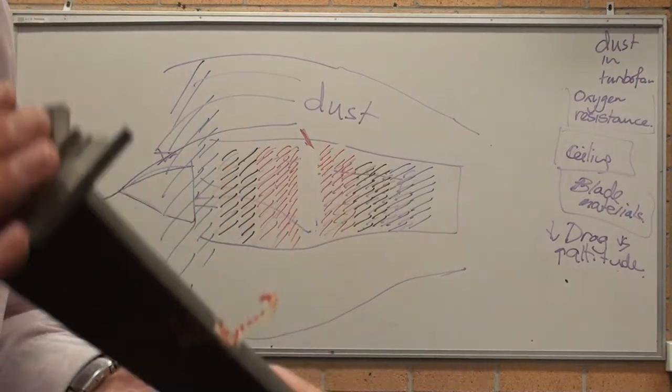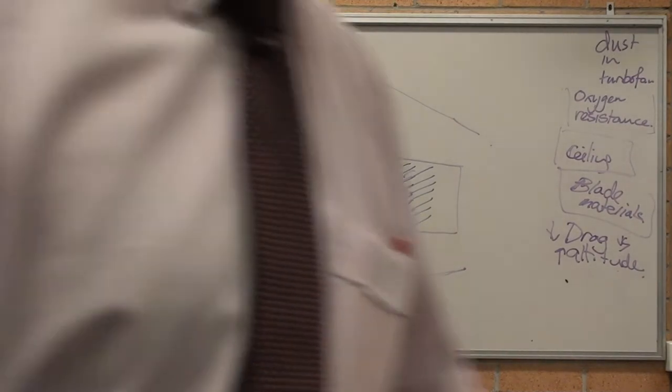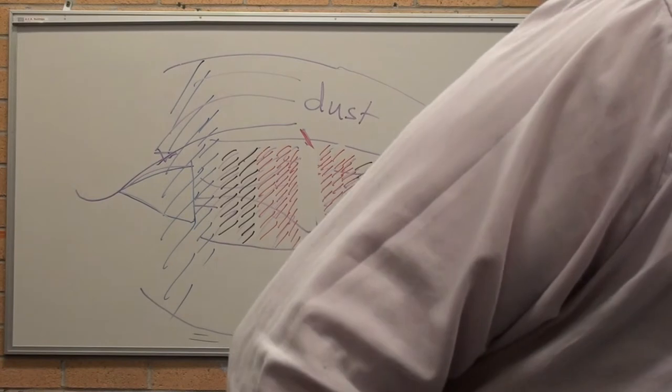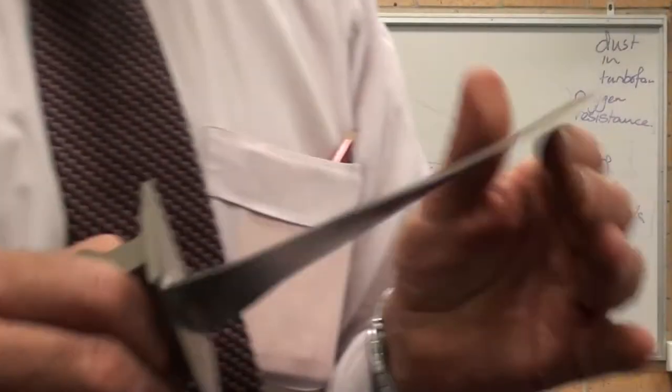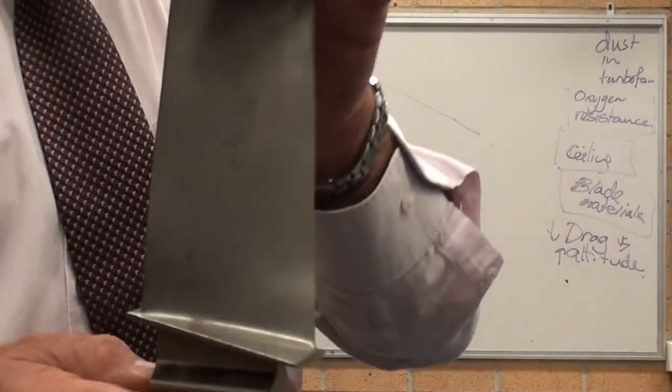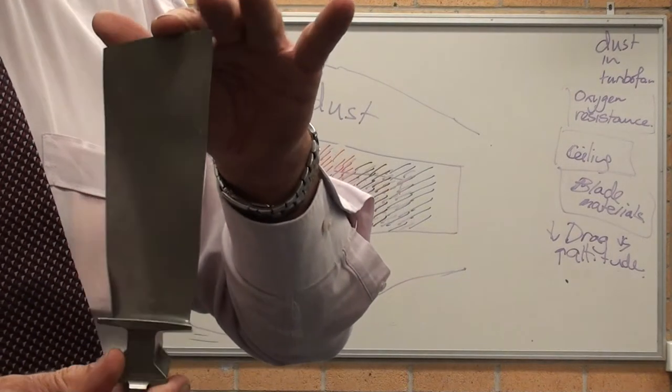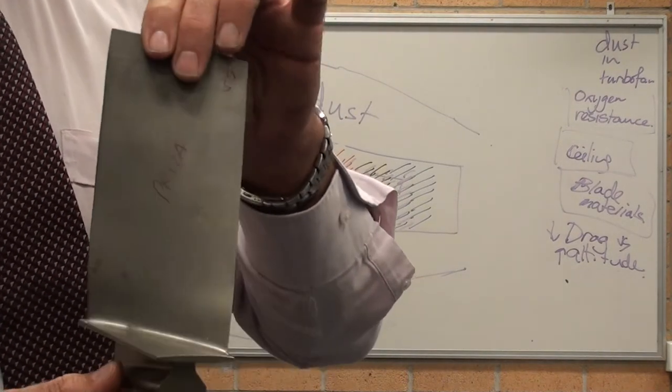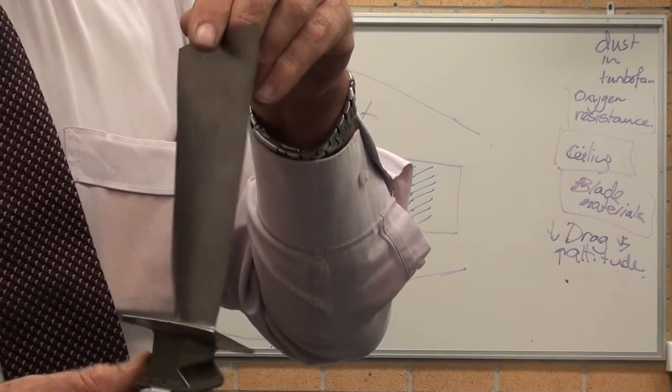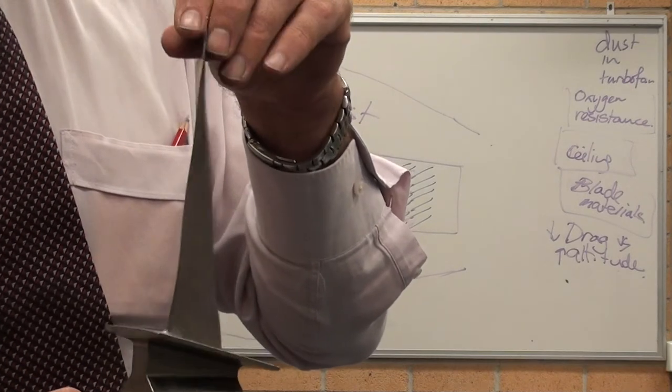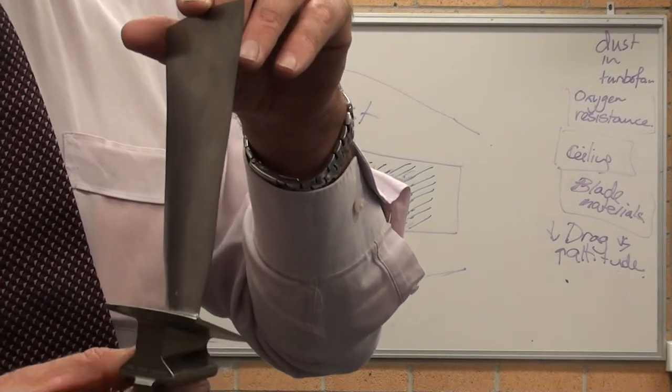That is another low pressure turbine blade as you can see as I rotate it. It's got that change in pitch that we spoke about to keep constant thrust and constant pressure along the length of the blade.